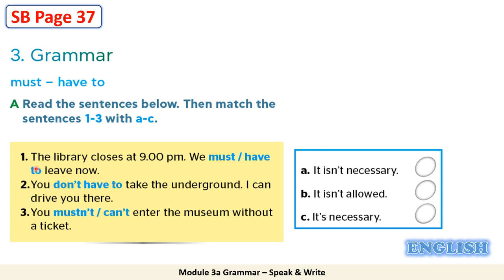Let's have a look at the given three sentences. 1. The library closes at 9 p.m., we must/have to leave now. 2. You don't have to take the underground, I can drive you there. 3. You mustn't/can't enter the museum without a ticket. Which of these three sentences means: A. It isn't necessary to do something. B. It isn't allowed to do something. C. It's necessary to do something.